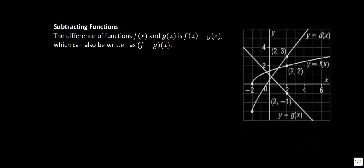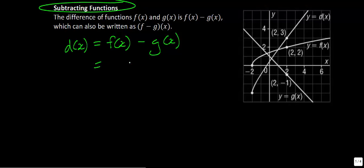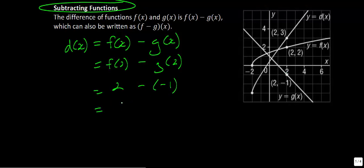Now let's look at subtracting functions. We have the same notation. To subtract functions is very similar. We have the same f(x) and g(x), but this time we have d(x) — the result of taking f(x) and subtracting g(x). Looking at input x=2: f(2) = 2, and g(2) = −1, so we compute 2 minus (−1). Two negatives make a positive, giving us 3. So d(2) = 3.